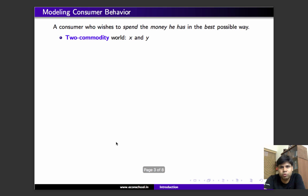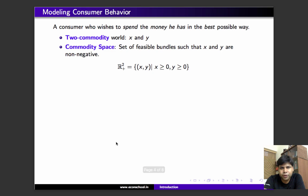Imagine that it is feasible for this consumer to consume any non-negative quantity of x and y. This defines our commodity space. Commodity space is the set of all feasible consumption bundles, given by R²₊ = {(x,y) | x ≥ 0, y ≥ 0}.